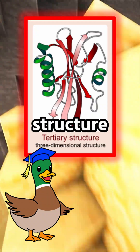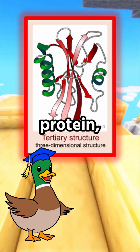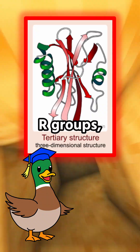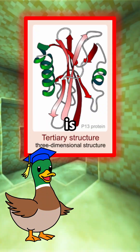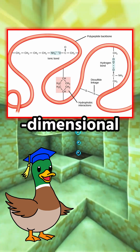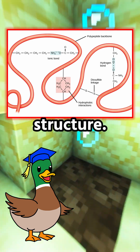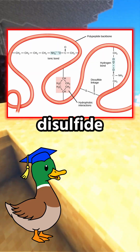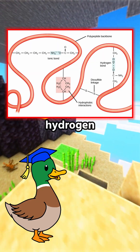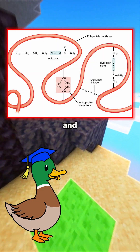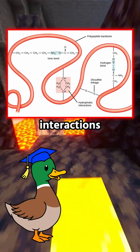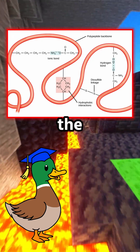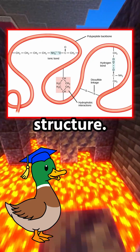The tertiary structure of a protein, formed by chemical reactions between R groups, is the three-dimensional structure. Ionic bonds, disulfide bonds, hydrogen bonds, and hydrophobic interactions all influence the 3D structure.